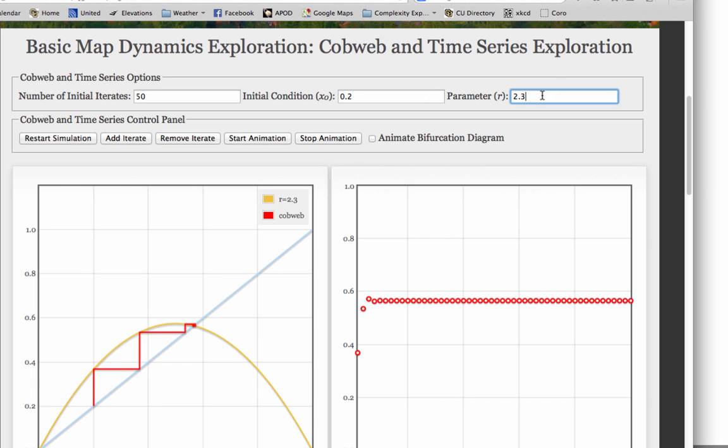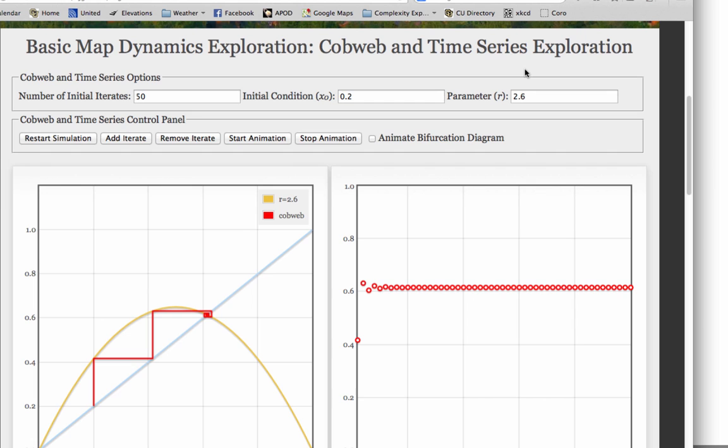You also may have noticed this little overshoot right here, which gets more pronounced if we raise r further. There's r equals 2.6, there's r equals 2.7. What's going on here is that the orbit is still converging to a fixed point, but instead of converging in a one-sided fashion, it's converging in an oscillatory fashion. It's kind of like if you push down on the hood of your car and the car bounces up and down for a while before settling out.